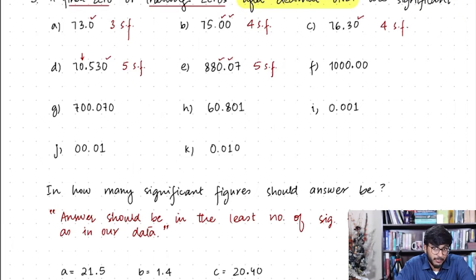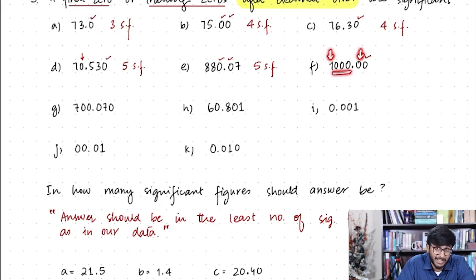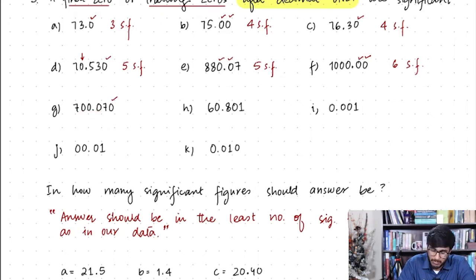For 1000.00: the two zeros after the decimal are trailing zeros, so they are significant. The three zeros before the decimal are sandwiched between 1 and the significant trailing zero after the decimal, so they are also significant — six significant figures in total. Similarly, 700.070: the trailing zero is significant, and the remaining three zeros are sandwiched between the two sevens — all zeros are significant, giving six significant figures.